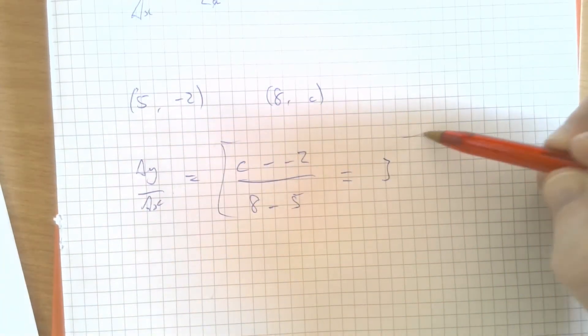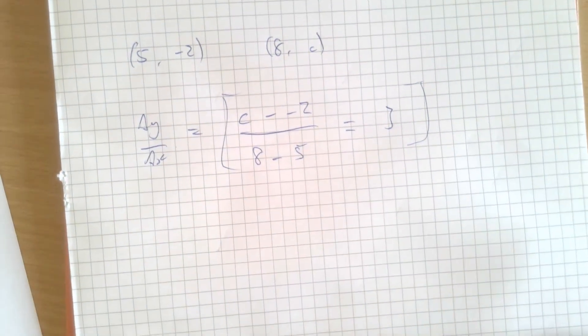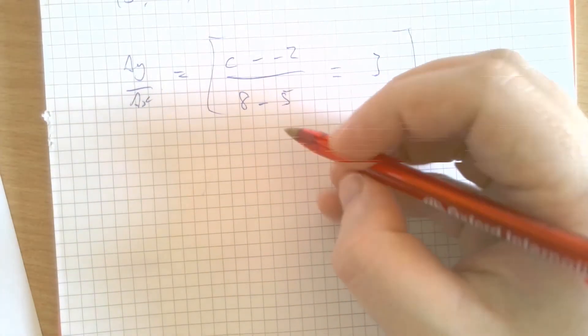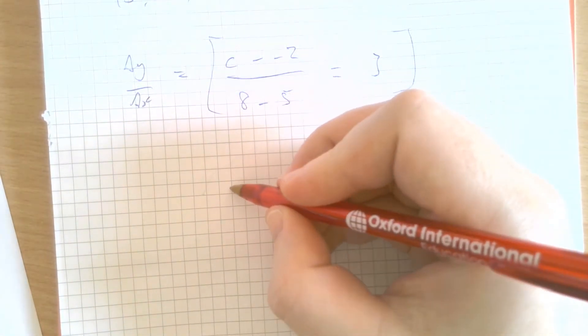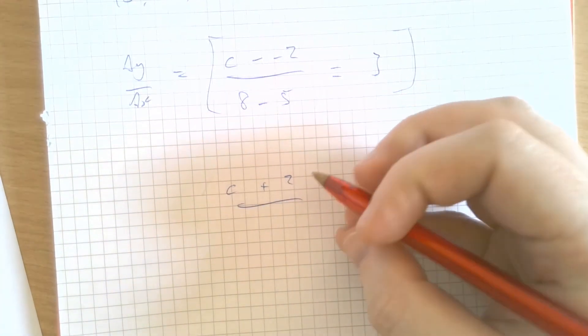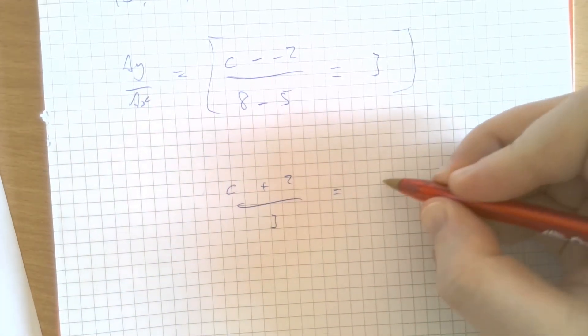What we've got here is an equation that we can solve. Obviously, it makes sense to simplify this first, doesn't it? So, c minus -2, well, that can be rewritten as plus 2. 8 take away 5 is 3, and that equals 3.